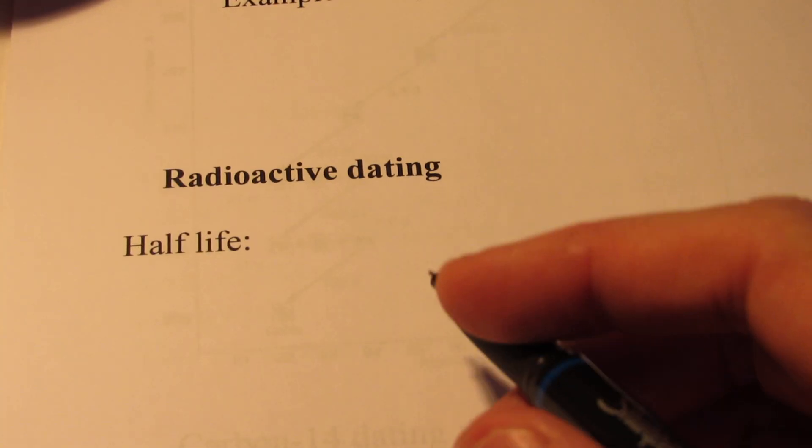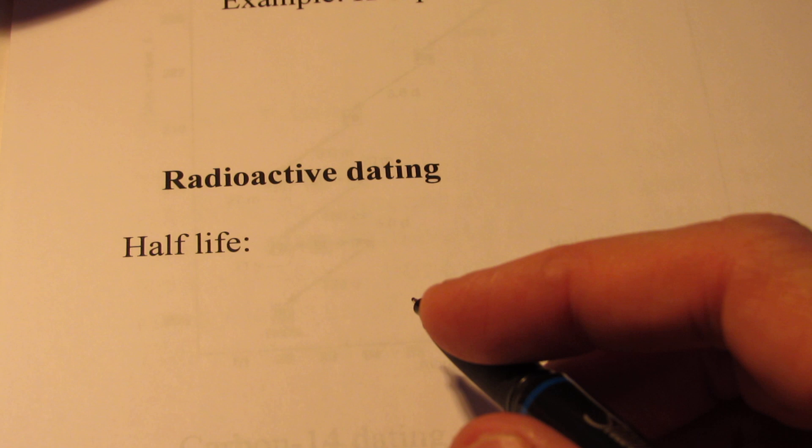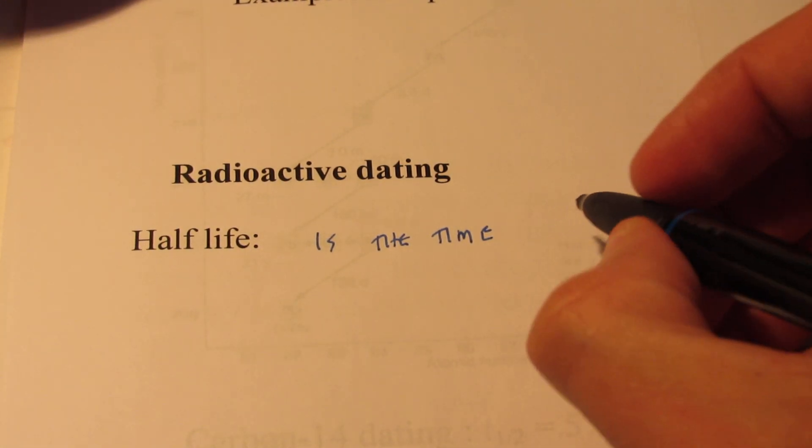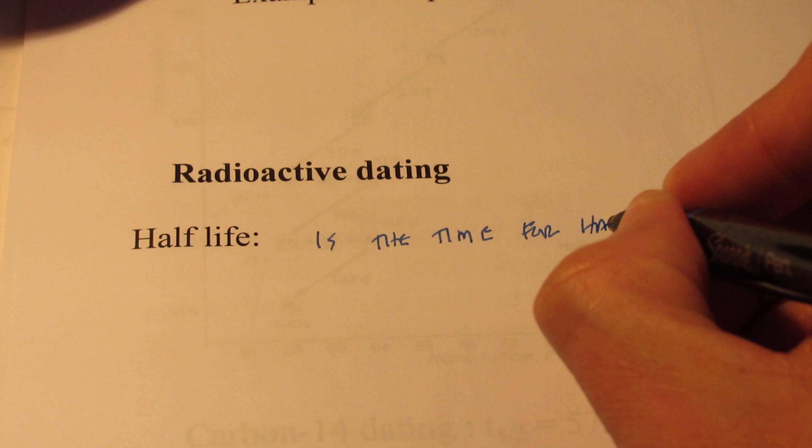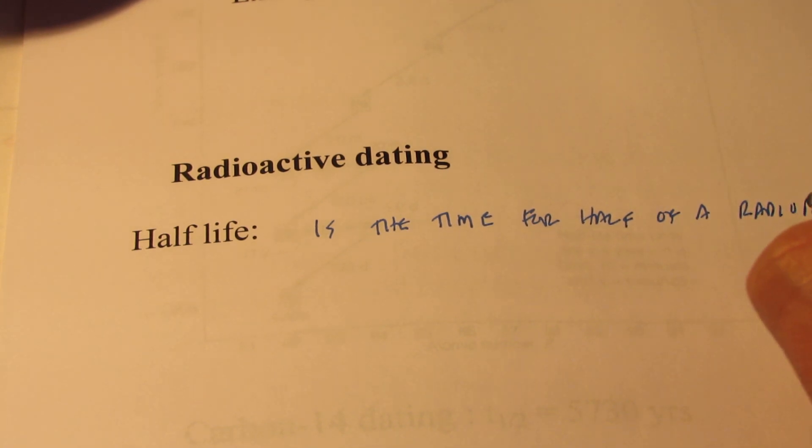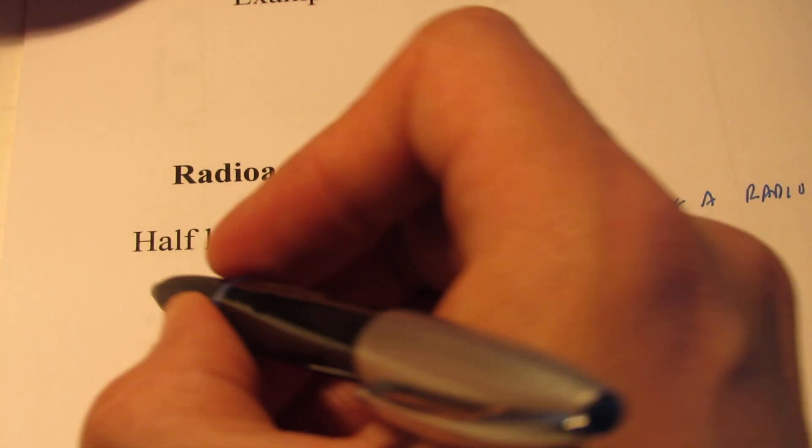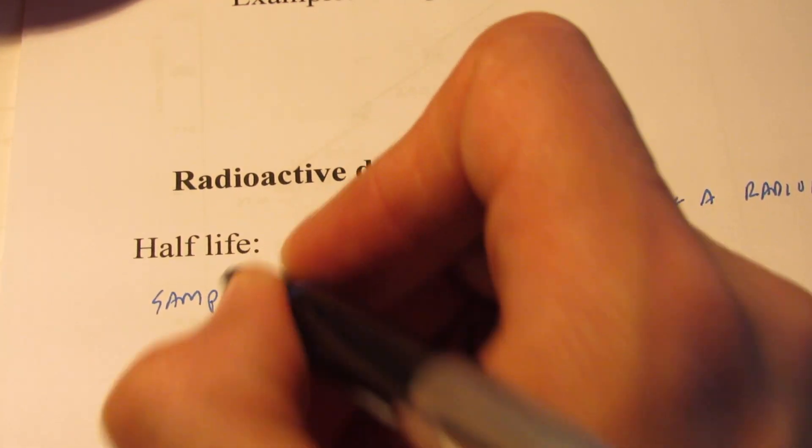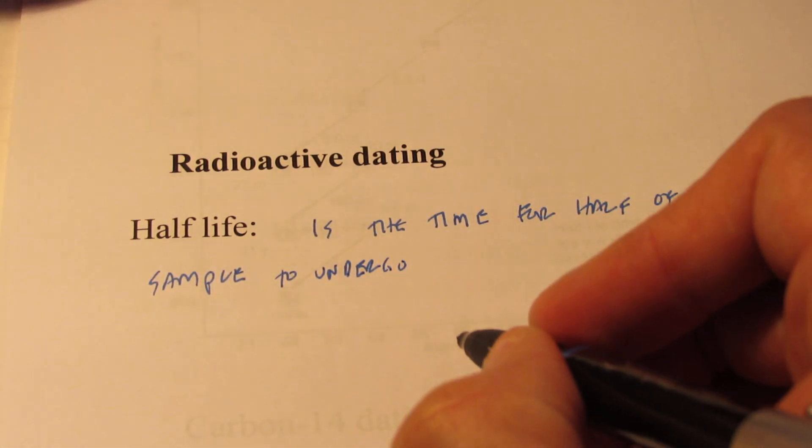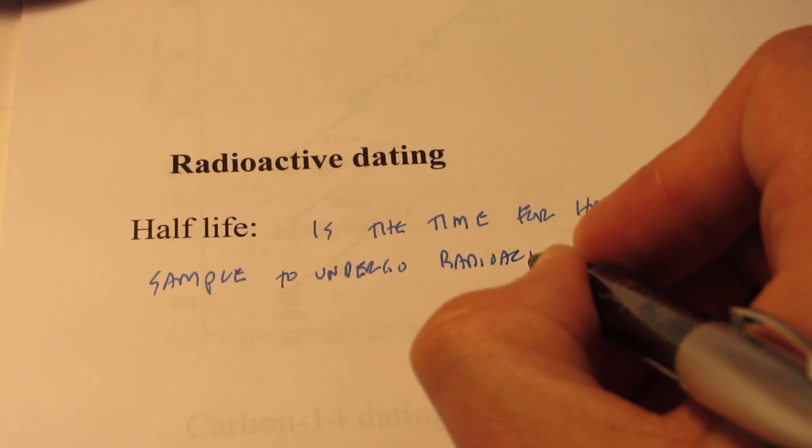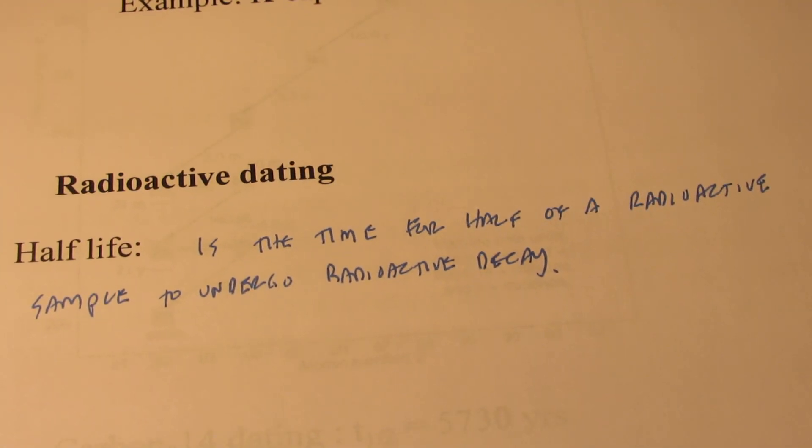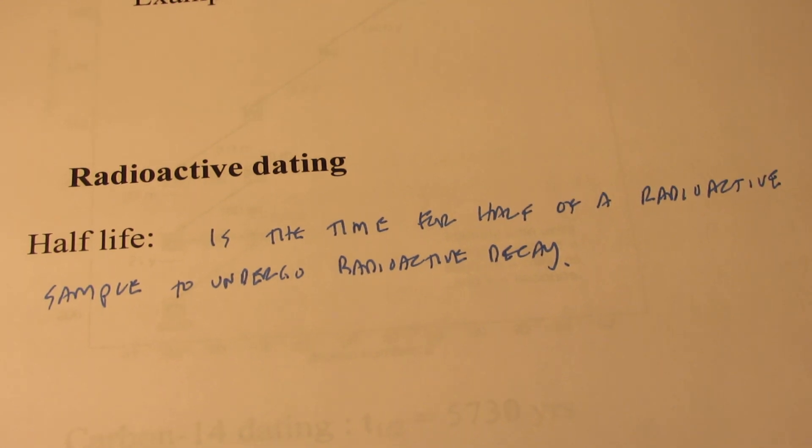You've probably heard of this term before. Let's define it for you anyway. Half-life is the time for half of a radioactive sample to undergo radioactive decay. So the time it takes for one-half of a radioactive sample to undergo radioactive decay.